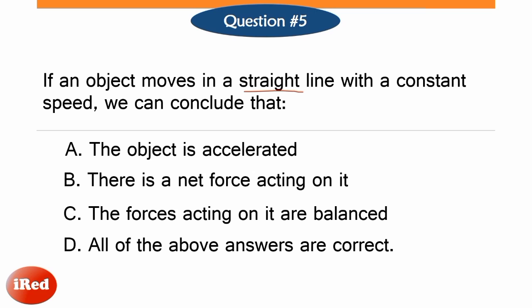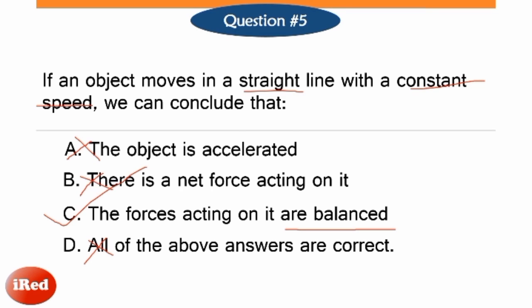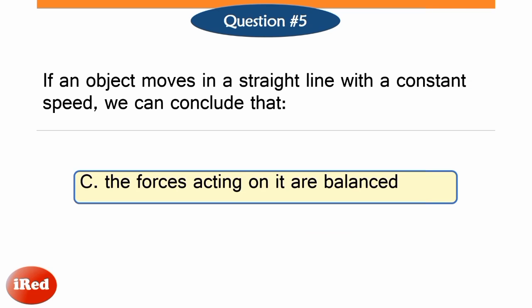An object moving in a straight line with a constant speed means it is moving with constant velocity. So option A is false — constant velocity means there is no acceleration, thus the object is not accelerated. Zero acceleration also implies there is no net force acting on the object, so option B is also false. If the object is moving with constant velocity, then the forces must be balanced. So the best answer is letter C: the forces acting on it are balanced. Option D is also false because options A and B are both false.